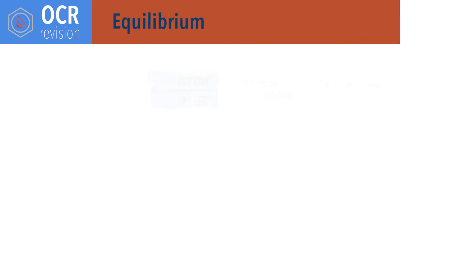For equilibrium. Kc equals concentration of products times each other divided by concentration of reactants times each other, each raised to the power of their molar ratio in the balanced reaction equation. Kc is the equilibrium constant based on concentration. Concentrations should be in moles per decimetre cubed, and the units of Kc can be different depending on the reaction.